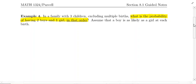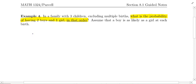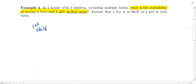Birth order matters here, so the tree diagram is going to be very helpful. For the first child, there's a 50-50 chance — it's either a boy or a girl. We'll write that down; those are our possibilities.